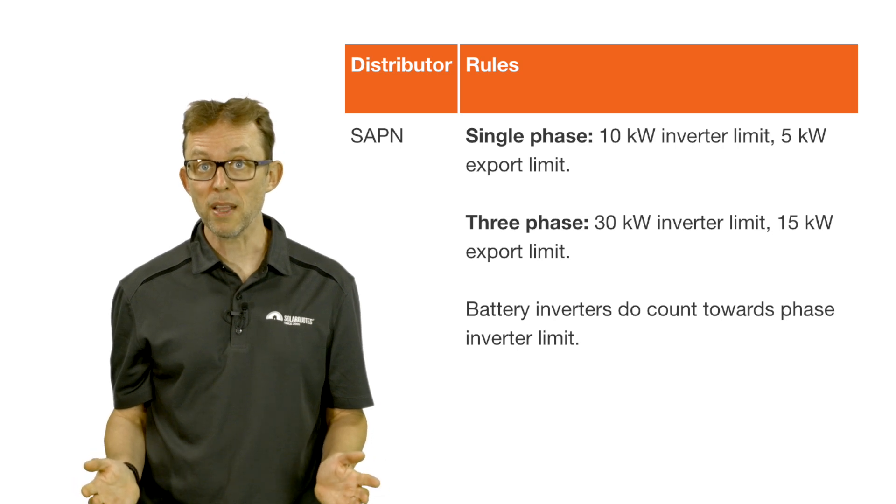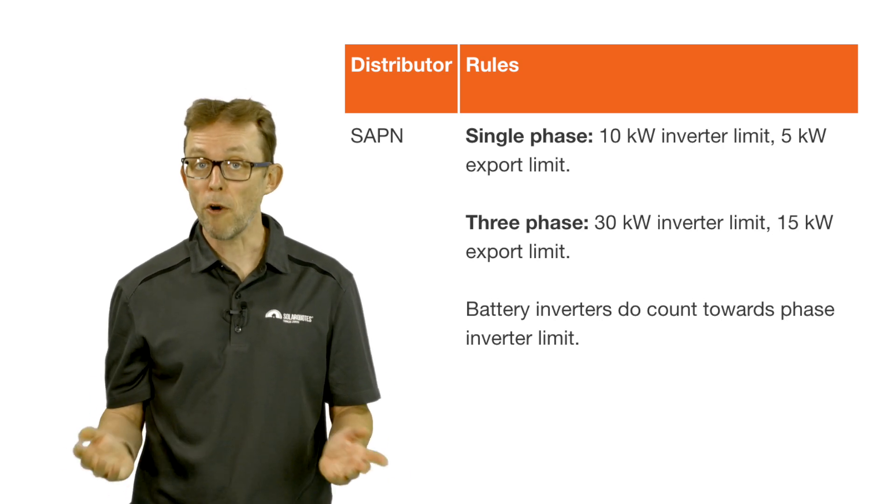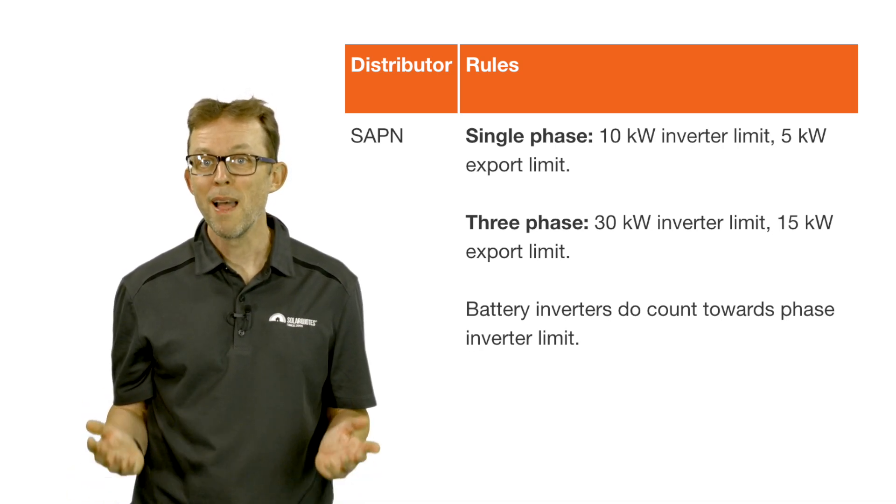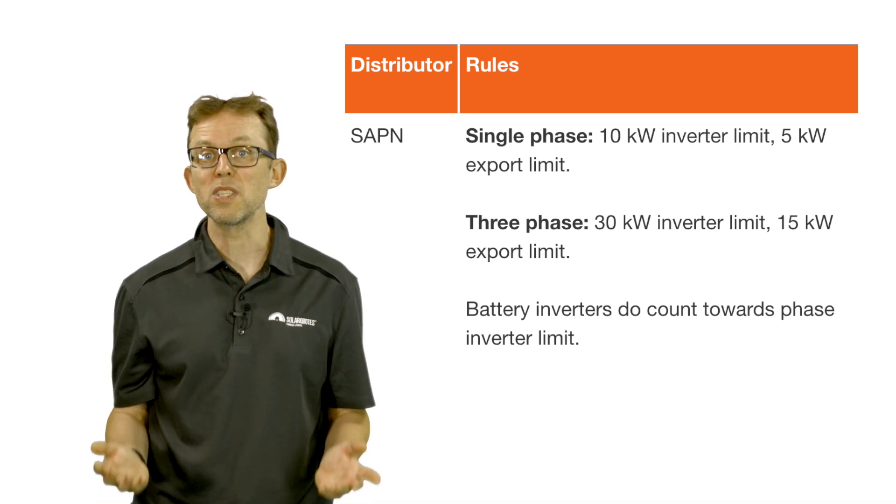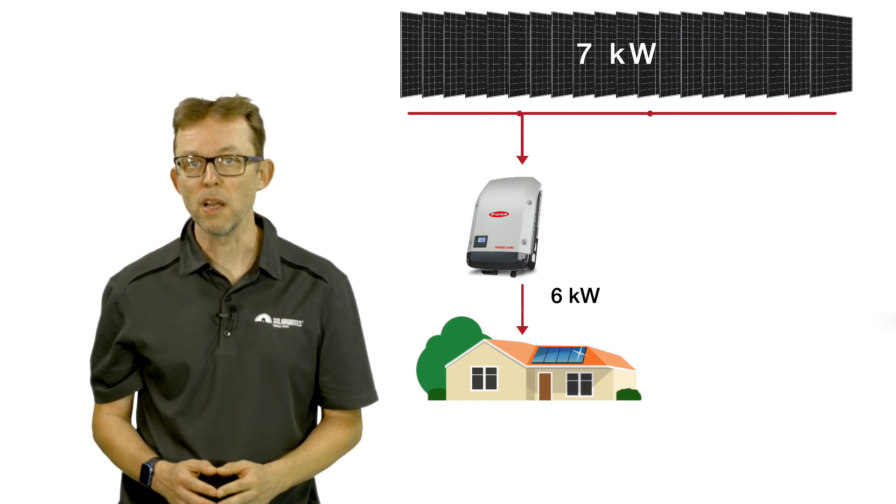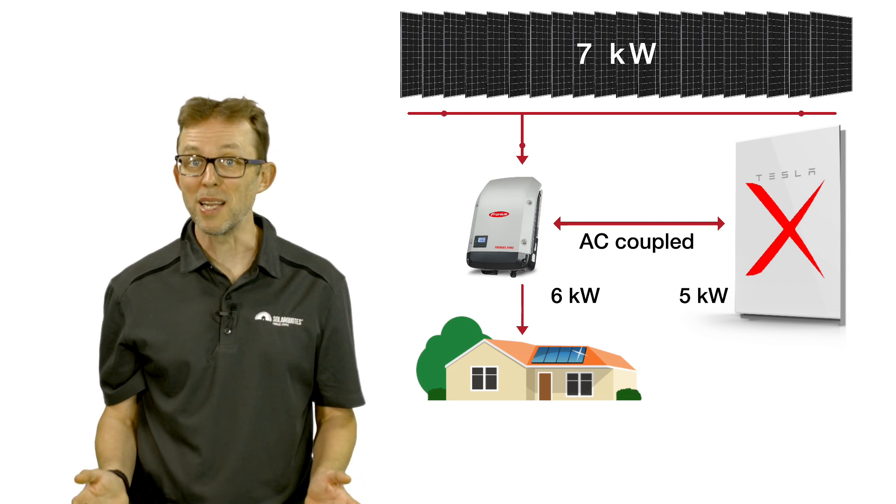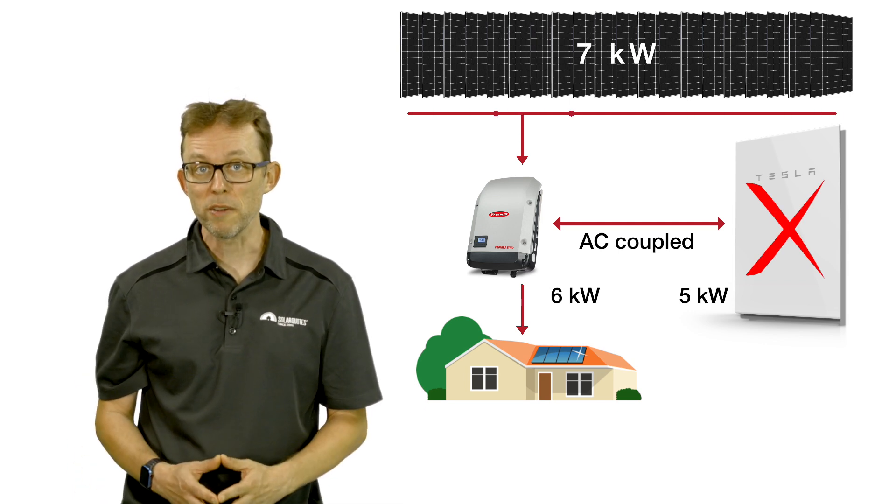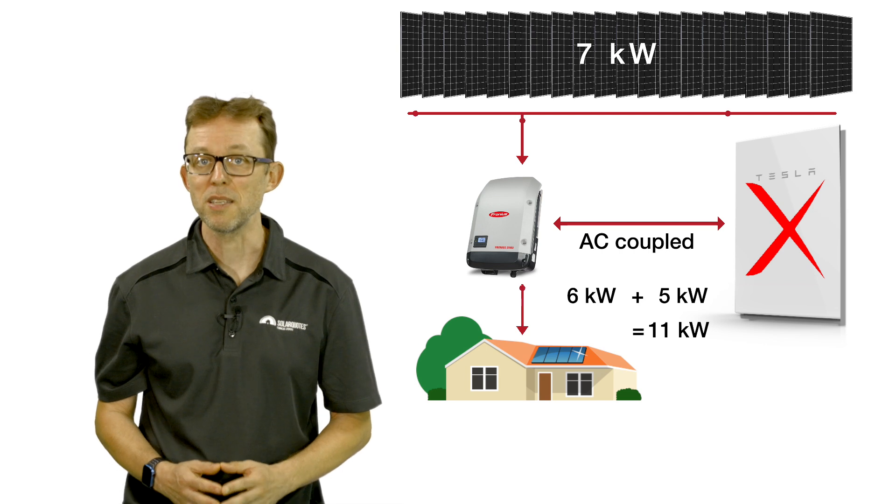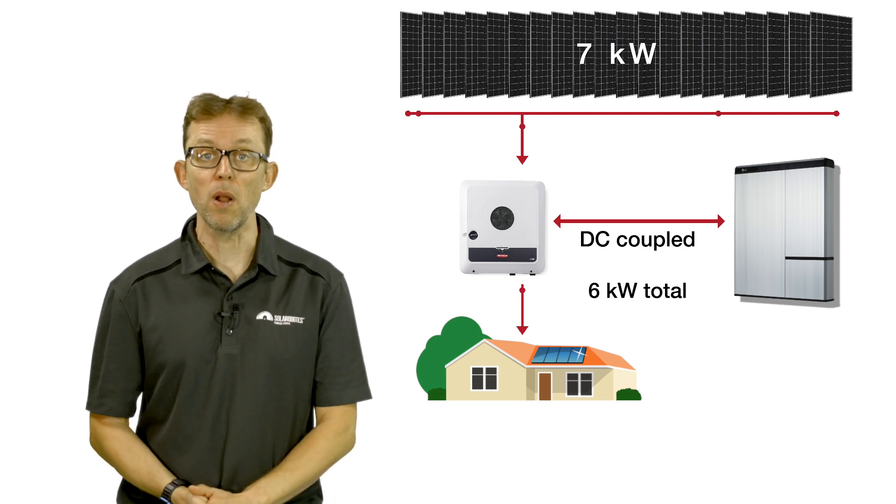Another drawback of AC coupling is rules on system sizing from your local electricity network and they may limit what you're allowed to install. For example, SA Power Networks allows a maximum of 10 kilowatts of inverter capacity per phase. Unless you can get an exemption, they count battery inverters towards this 10 kilowatt limit. Let's say you have an existing 7 kilowatt solar system with a 6 kilowatt inverter. You want to add a Tesla Powerwall which has a 5 kilowatt inbuilt battery inverter. SA Power Networks may say you can't because the 6 kilowatt solar inverter plus the 5 kilowatt Powerwall battery inverter equals 11 kilowatts of total inverter capacity. DC coupling bypasses this limit because there's only one inverter that handles both the battery and solar.